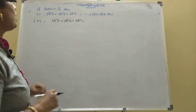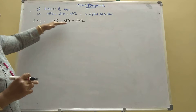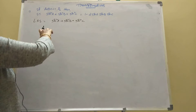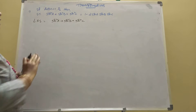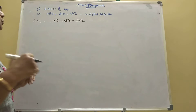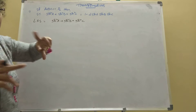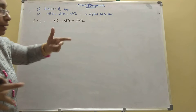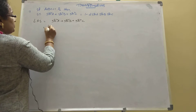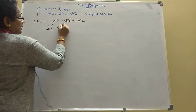We have to prove that. Now we are taking LHS. Sin square A plus sin square B plus sin square C is given. We should multiply and divide by 2 — I am writing 1 by 2 outside — giving 2 sin square A.